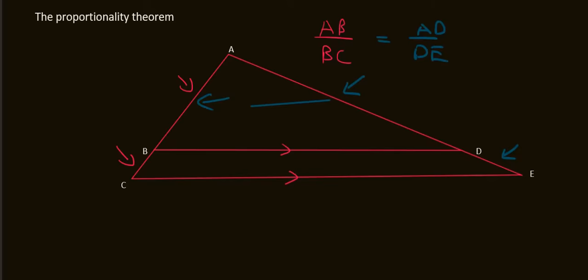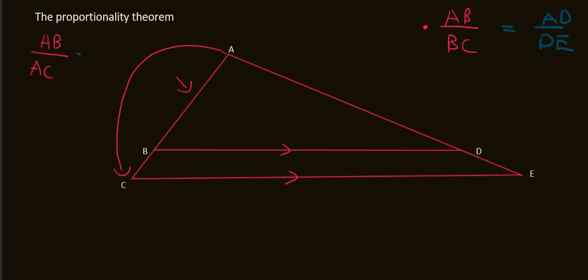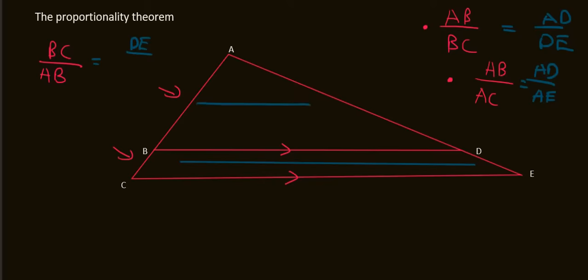And I could choose other combinations. I could say AB, so that's this one, over the whole length from A to C. Then on the other side I would choose AD and then I would have to choose the whole length of AE. And in fact you can choose any combination that you like. You could for example start with BC and then make that go over AB for example. Then as long as on the other side you match it. So BC matches with DE and AB matches with AD.